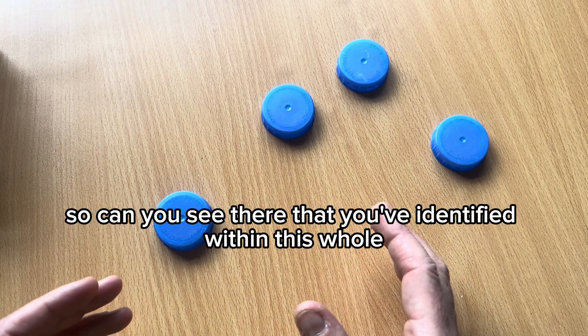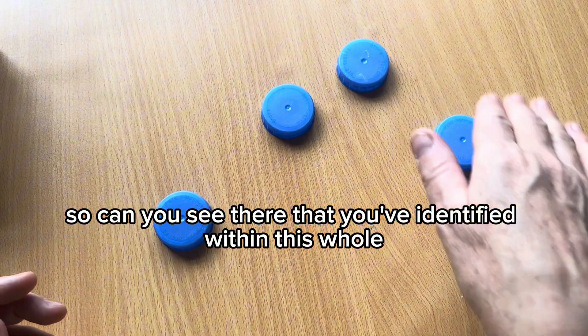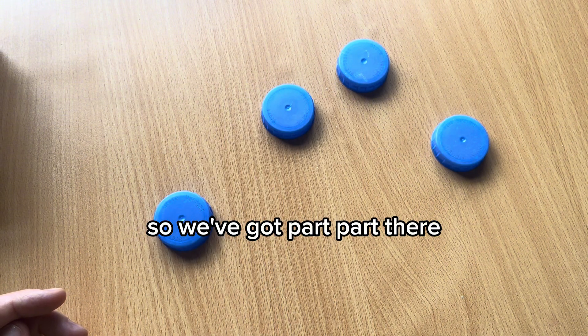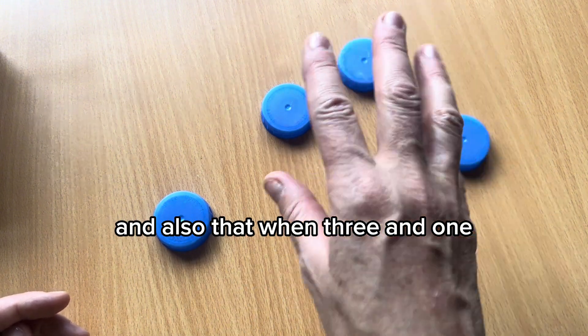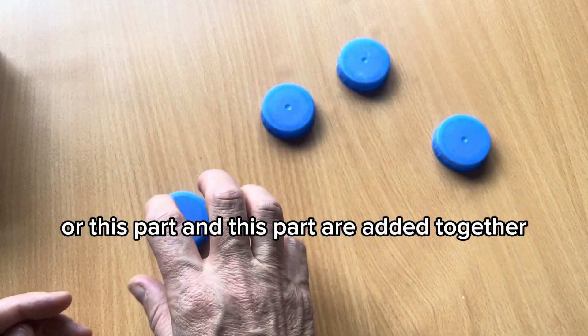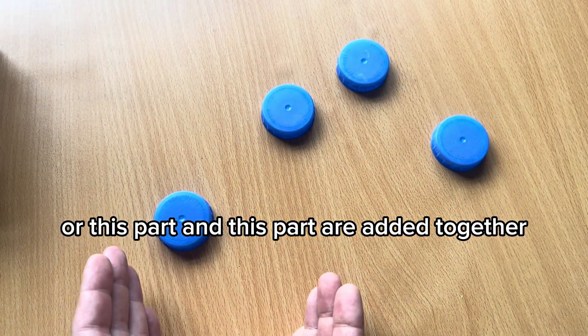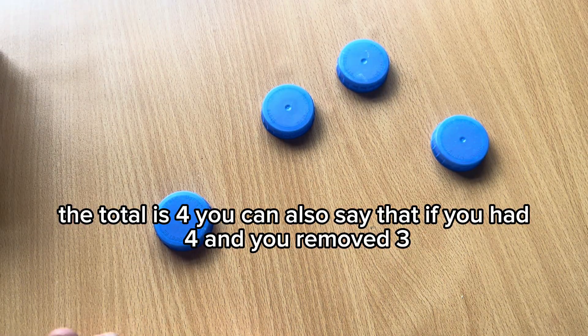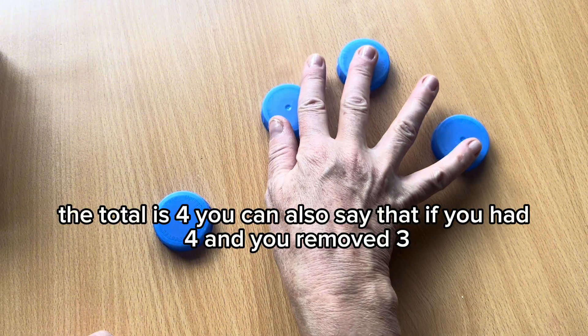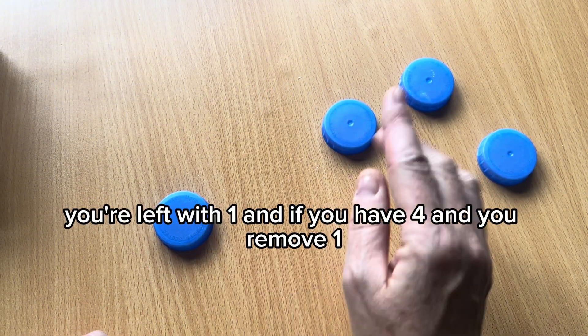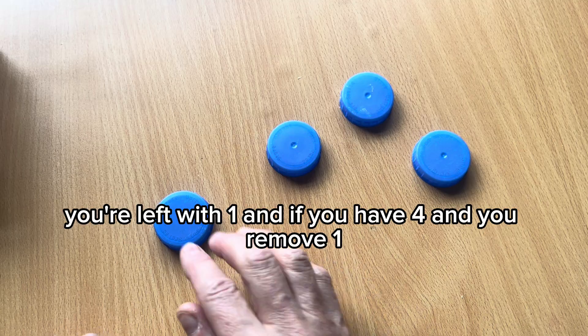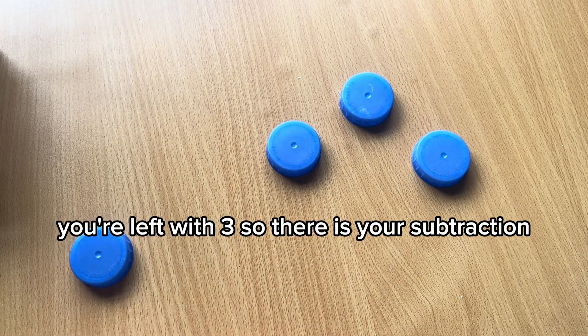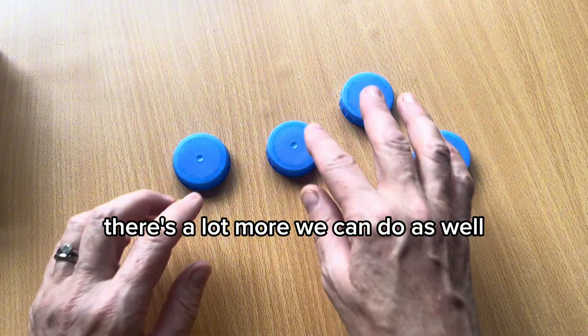So can you see there that you've identified within this whole that that's a part and that's a part? So we've got part, part there. And also that when three and one or this part and this part are added together, the total is four. You can also see that if you had four and you removed three, you're left with one. And if you have four and you removed one, you're left with three. So there is your subtraction.